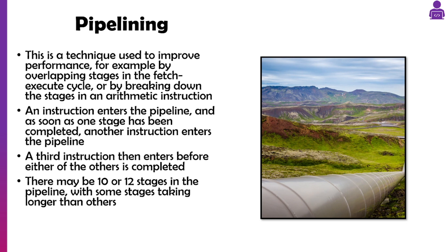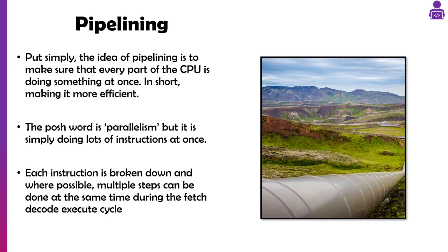A program could have 10, 12, or 15 stages in the pipeline, and some stages might take longer or shorter than others. It's quite difficult to manage, but simply put, the idea is to make sure everything in the CPU is working at once — there's no point waiting around. The proper word is parallelism: we make it seem like you're doing lots of instructions at once when actually you're just fetching one whilst the previous one is being decoded and the one before that is being executed.